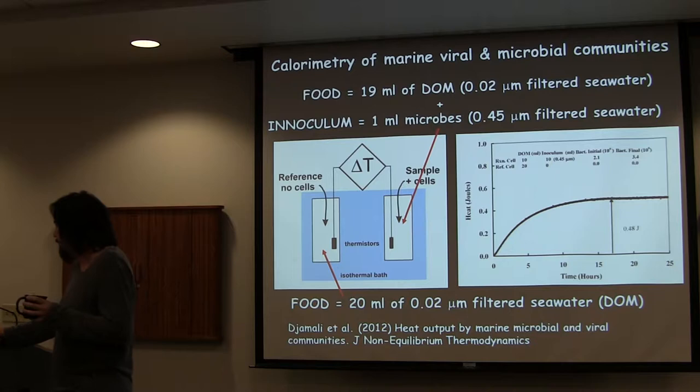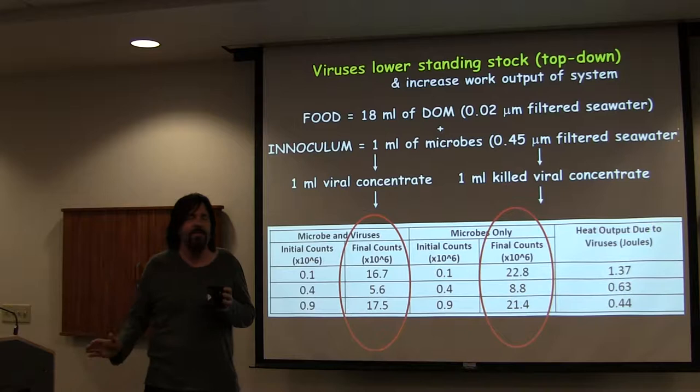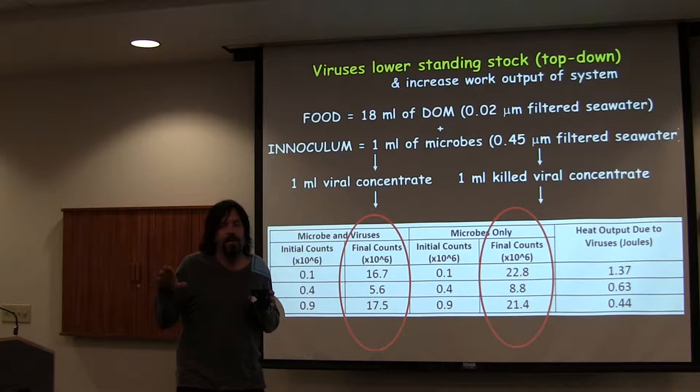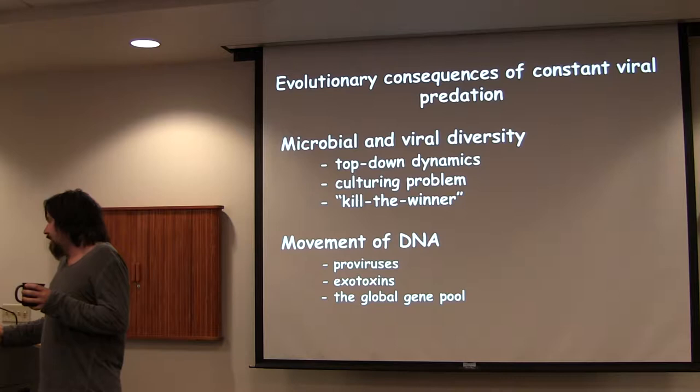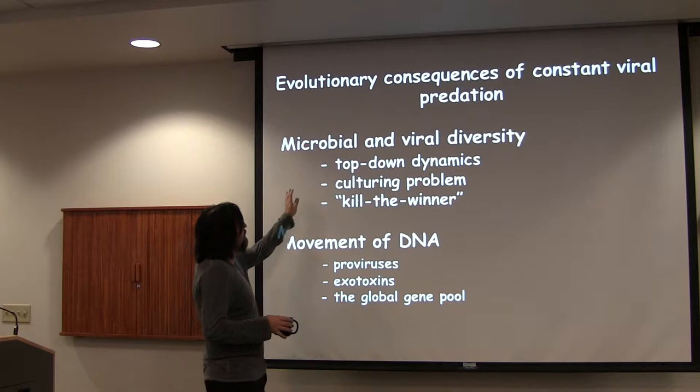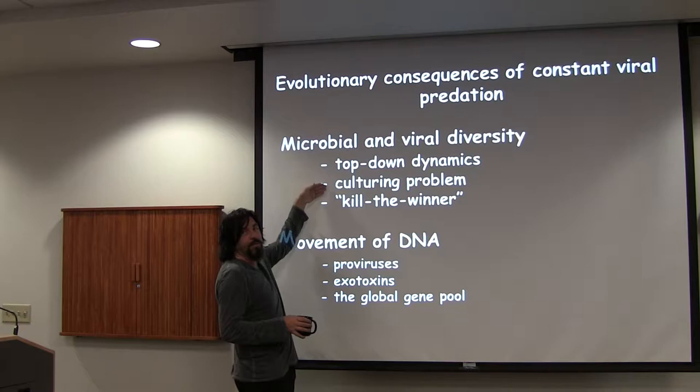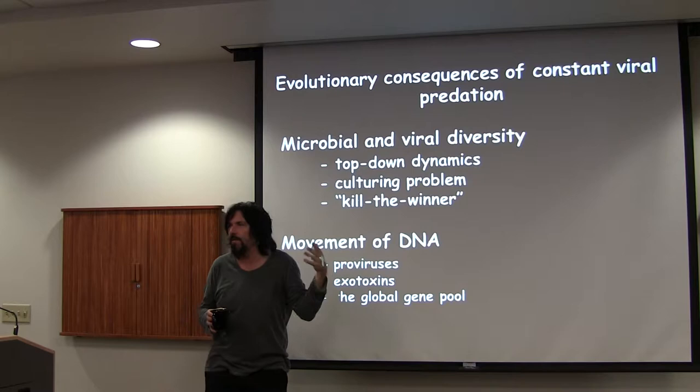The take-home message is that viruses go up and lower the total number of microbes, but while they're doing that they increase the rate at which the system is working and you get higher energy output. Then we went through microbial-viral dynamics and talked about the top-down thing, the cold strain problem and how we got around it with metagenomics, and then the kill-the-winner and red queen hypotheses. Does that sound familiar?